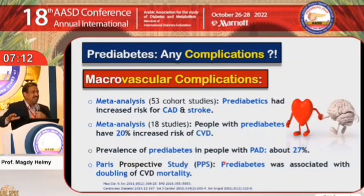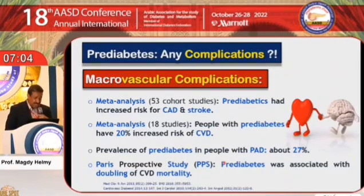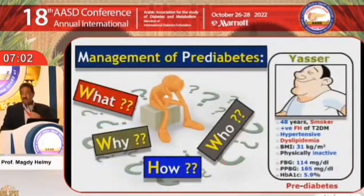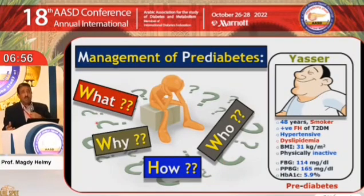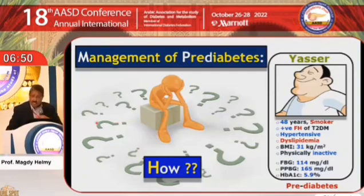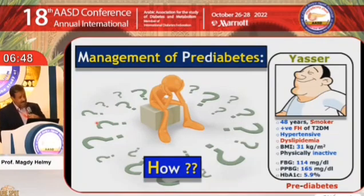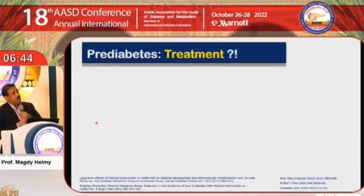So pre-diabetes is not an innocent condition. It is not simply a matter of keeping healthy and managing weight to avoid type 2 diabetes — pre-diabetes is a condition that can lead to vascular complications. The third question from Yasser is: how to treat — what can I do to manage pre-diabetes?